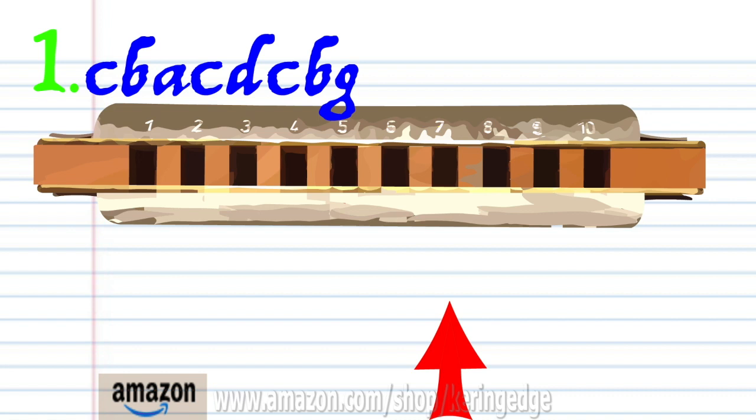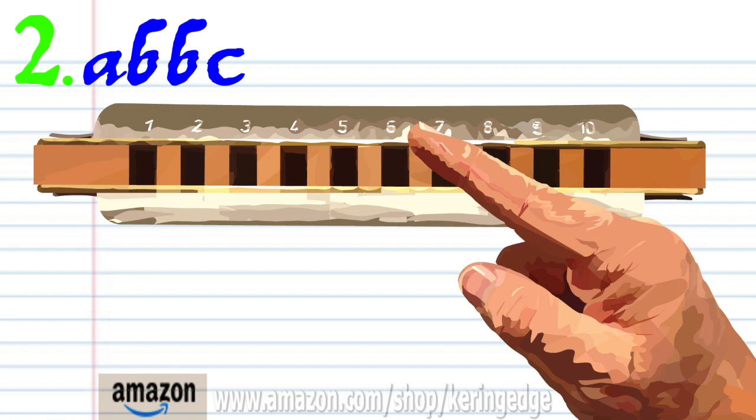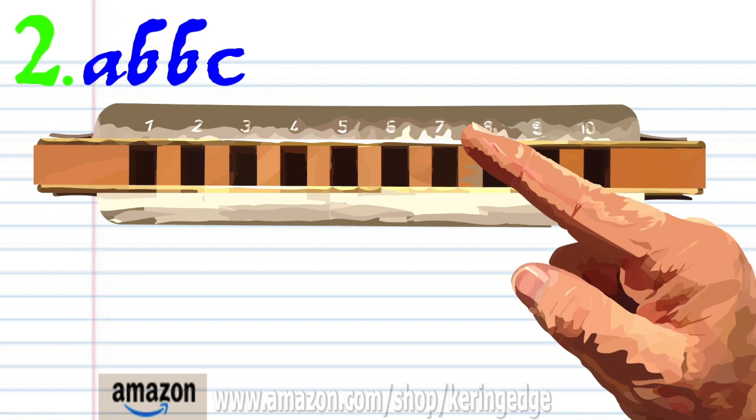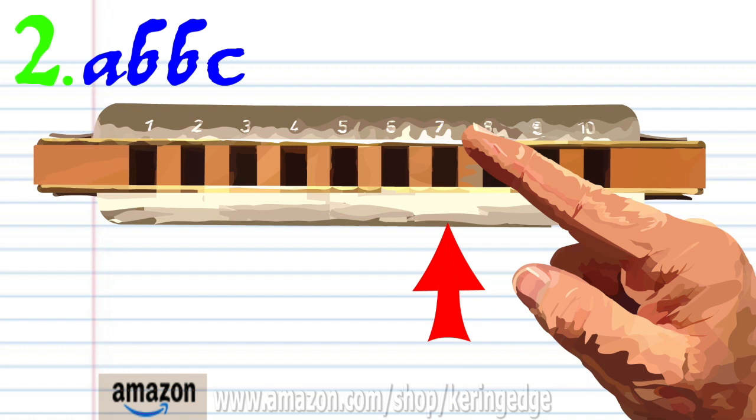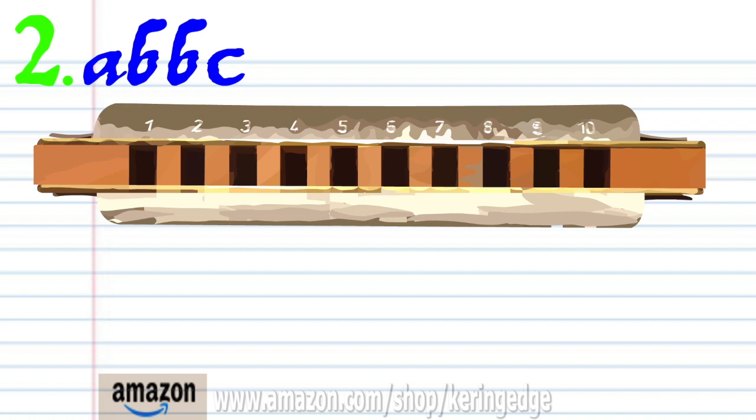For phrase two, breathe in through six, breathe in through seven twice, and blow into seven. Practice this until you end up with something that sounds like this.